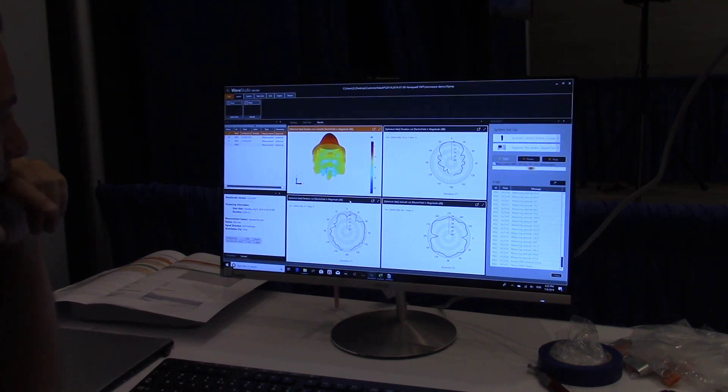And then the bottom plots show the cross pole which are much lower and have less shape to them.